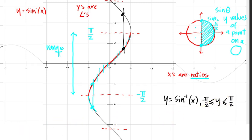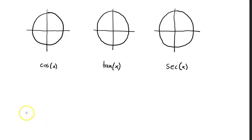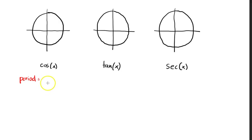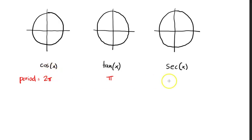Let's quickly look at a few other functions — these three are going to be the most useful. First, what is the period for each of these? The period for cosine x is 2π. Tan x — that is π. And the period for secant x — well, that is 1 over cosine, which means it should have the same period as cosine: 2π.